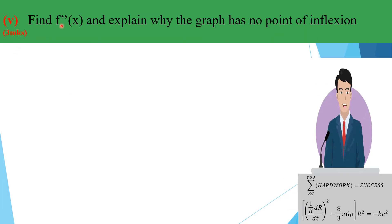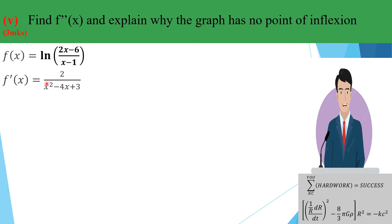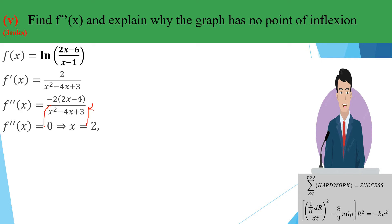Next, find f''(x) and explain why there is no point of inflection. Differentiating f'(x) = -2/((x-1)(x-3)) using the quotient rule: numerator is 0 - (-2)(2x-4), giving 2(2x-4) = 4(x-2), and denominator is ((x-1)(x-3))². So f''(x) = -2(2x-4) / ((x-1)(x-3))².